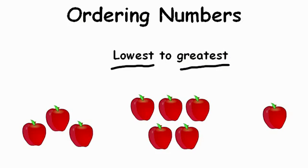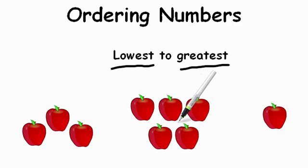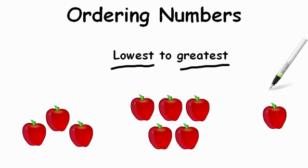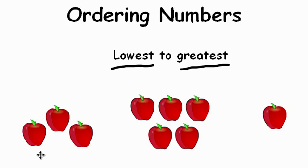So here I have three sets of apples. One set has three apples, one set has five apples, and one set has one apple. With these groups, we need to put them in order from lowest — from smallest amount to greatest amount. So if I have three, five, and one, which is the smallest amount?